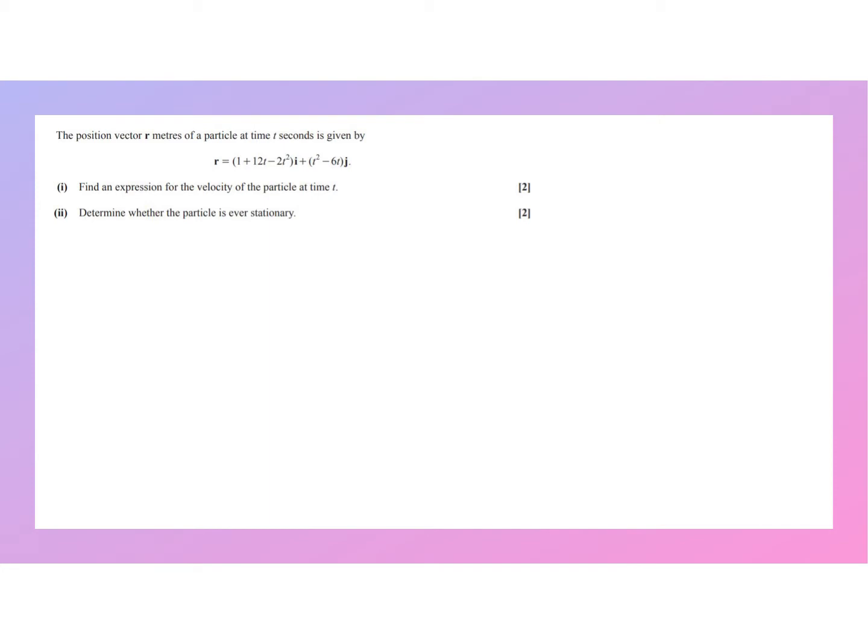So the position vector is denoted by r, and in part one we're asked to find an expression for the velocity at time t. So the fact that it says expression means we're not finding a numerical value for the velocity, we're finding the formula effectively for the velocity.